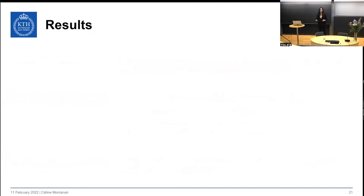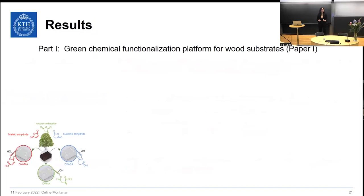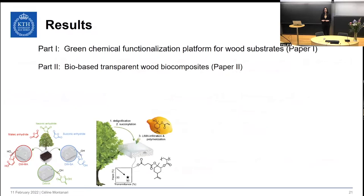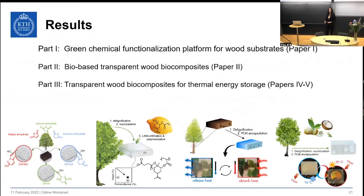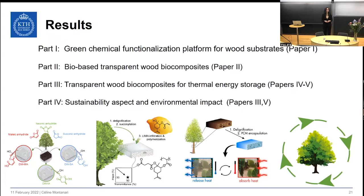The results are divided into four parts. First, I will discuss a green chemical functionalization platform for wood substrate. Then, I will describe the design of fully bio-based transparent wood biocomposites. In part three, I will discuss the design of transparent wood biocomposites for thermal energy storage, including both proof of concept and bio-based design. And finally, I will discuss sustainability aspects and the environmental impact of the transparent wood.